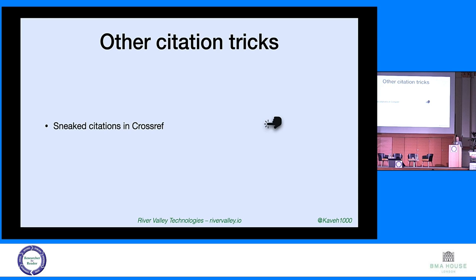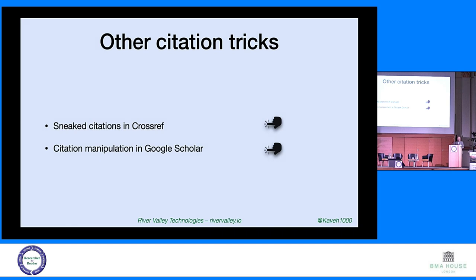There are lots of other tricks. Recently we found a trick with citations in CrossRef — so-called sneak citations. By putting metadata after publication without changing the version of record, citations were being sneaked into CrossRef. This was found by Guillaume Cabanac. Similarly, Google Scholar has been manipulated, and about 60% of institutions use Google Scholar when assessing the impact of a scholar, so it's an important area.